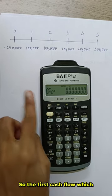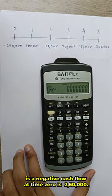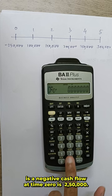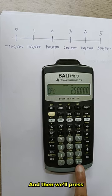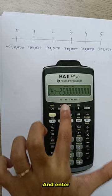CF, so the first cash flow which is a negative cash flow at time 0 is 2 lakh 50,000. So we will enter that and then we will press reset for the negative value and enter.